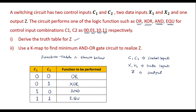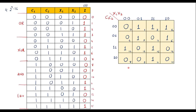Now, the question asks to use K-map to find the minimum AND-OR gate circuit. Minimum AND-OR gate implementation is done with respect to SOP (Sum of Products). Sum of products is obtained from min-terms, so we derive the min-term expression by making groups of 1s.